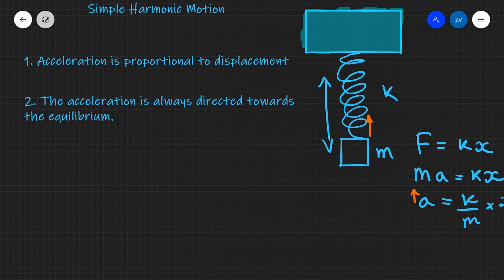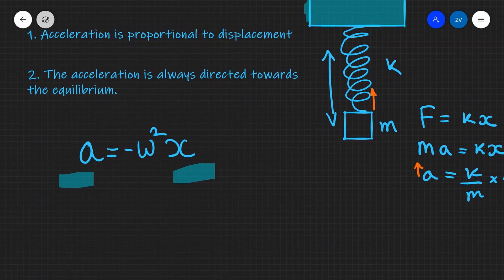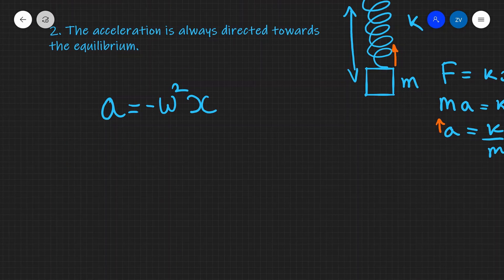Mathematically, this is presented by the governing equation of simple harmonic motion: the acceleration a is proportional to the displacement x, and the constant of proportionality is minus omega squared. So acceleration is directly proportional to displacement and always directed towards the origin. Here, omega is our angular frequency — how many radians per second we cover.